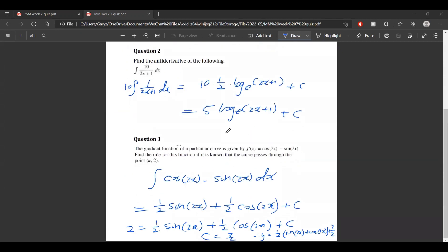Question 2, we need to find the anti-derivative of the following. So first of all, take the constant out. Then we know that this is just a log e to the power of 2x plus 1. And we know that we have to times it by the reciprocal of the coefficient of x. Therefore it's 10 times a half times log e of 2x plus 1 plus c at the end, which gives us 5 log e 2x plus 1 plus c.